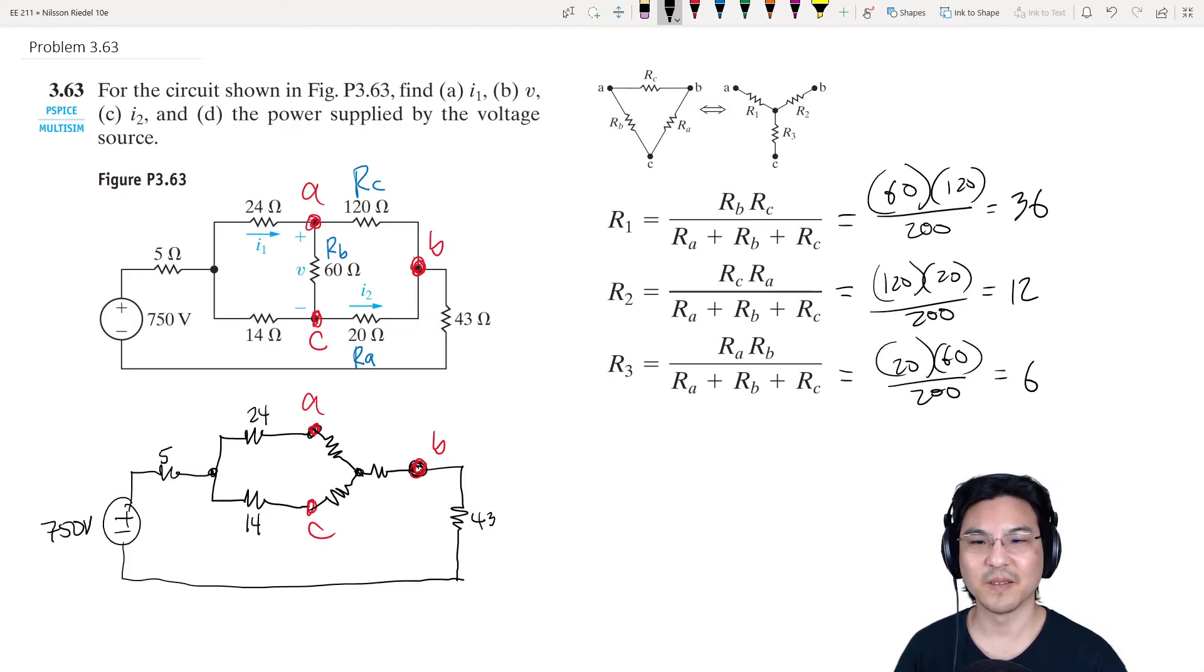So R1 is this one, so that's 36. R2 is next to node B, so that's this one over here, 12. And then RC and R3 is next to node C, so right here, 6.